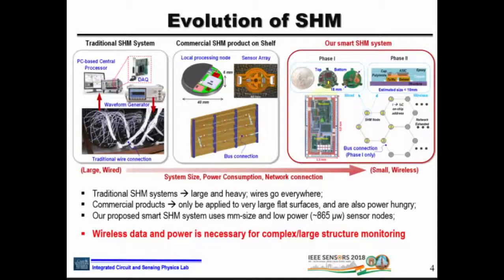Commercially available SHM uses local processing nodes instead of a centralized processing node. These are about 4 cm wide and use bus topology. While this is better than the traditional approach, it is still large, and since it uses bus topology, the system is vulnerable to damage even if a single wire gets cut.